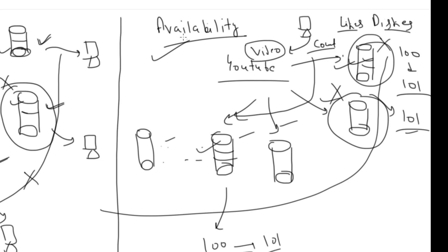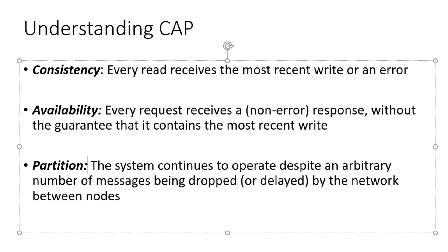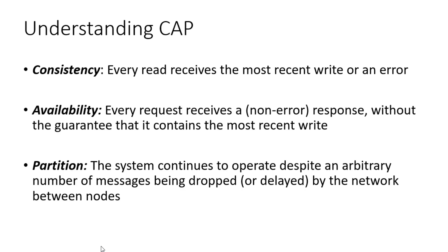The third thing is Partition. In the CAP theorem, Partition is about network failure. We have different servers and if there is a network failure — affecting two nodes, three nodes, one region, or two regions — that is a partition. Partition means there is a network failure between parts of the system.